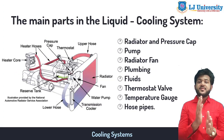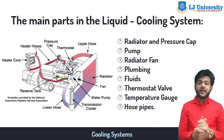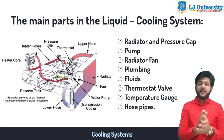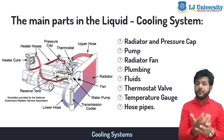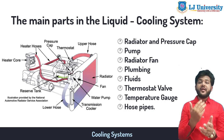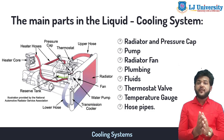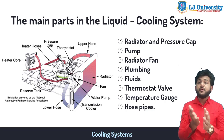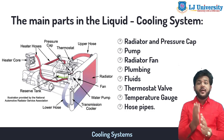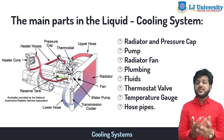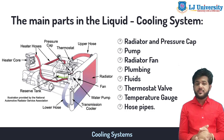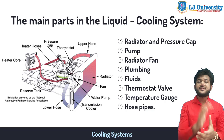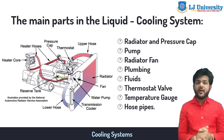The main parts of the cooling system are: radiator and pressure cap, water pump, radiator fan, plumbing, fluids, thermostat, water temperature gauge, and hose pipes. Let's see all of them one by one.